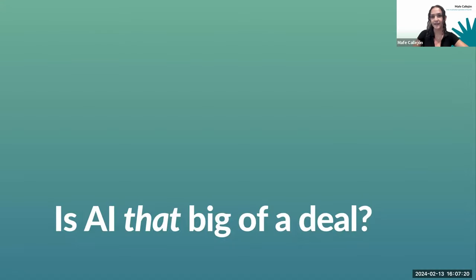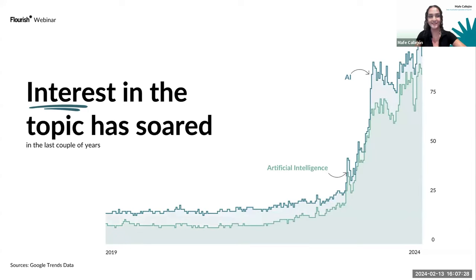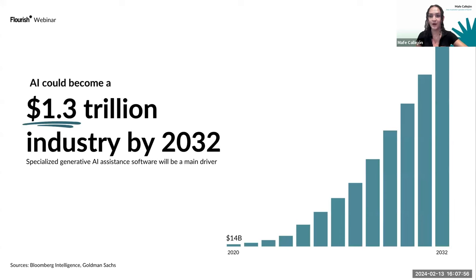Is AI really that big of a deal? Data seems to suggest so. A quick look at Google Trends data shows that in the past five years, interest in artificial intelligence has soared, driven by the launch of tools like ChatGPT, Google Gemini, and Microsoft Copilot. According to Bloomberg Intelligence and Goldman Sachs, the AI industry could become a 1.3 trillion dollar industry by 2032, with specialized generative AI assistance software as the main driver.